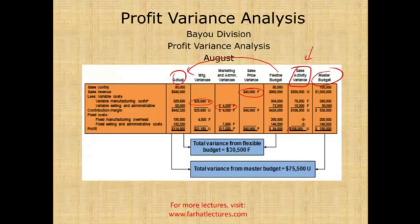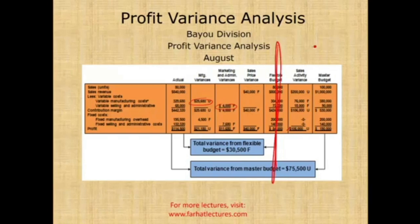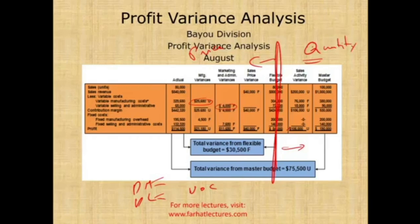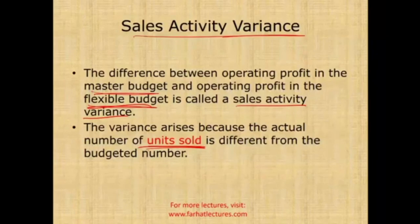The big picture: the flexible budget sits in the middle of our analysis. On one side, the difference between the flexible and planning budgets is driven entirely by quantity (sales activity). On the other side, the difference between the actual and flexible budgets is driven by price. Going forward, we'll drill into direct material, direct labor, and variable manufacturing overhead, breaking those figures into price and quantity — or efficiency and usage — variances.